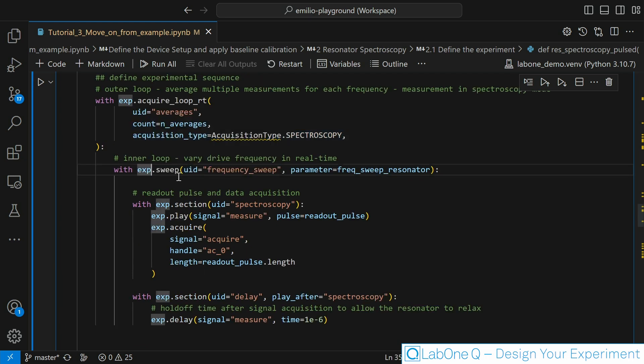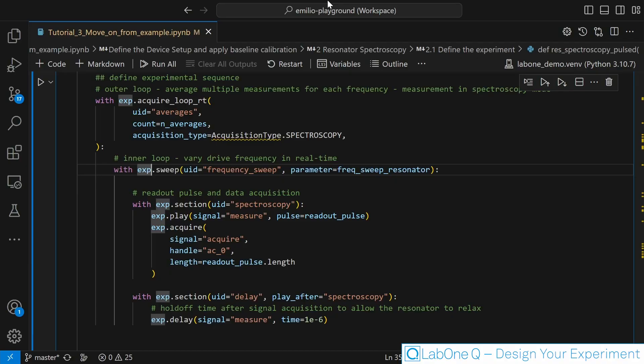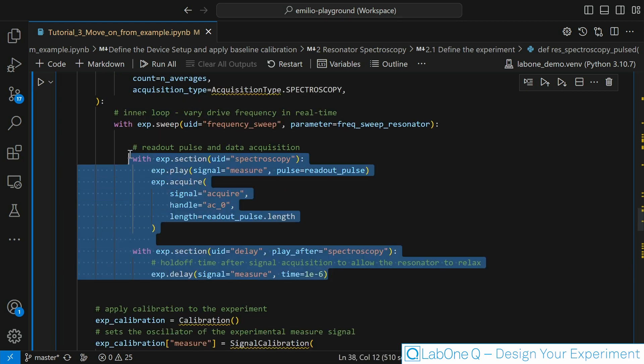Then we are defining a sweep. The sweep is one of the most important concepts in Lab1Q. It allows you to test multiple values inside your experiment. This is how it works: you are just calling the sweep instruction, you can give it a UID if you wish, and you pass as parameter what you previously defined as a sweep parameter. Whatever is going to come after is actually going to be repeated each time for each parameter inside this array.